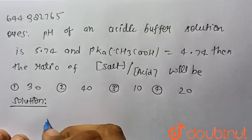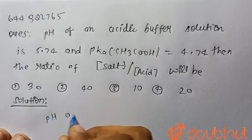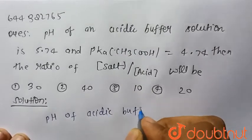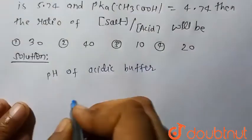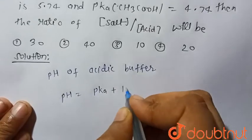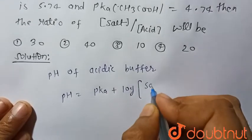So we know that the formula of the pH of acidic buffer is given by: pH is equal to pKa plus log of salt upon acid.